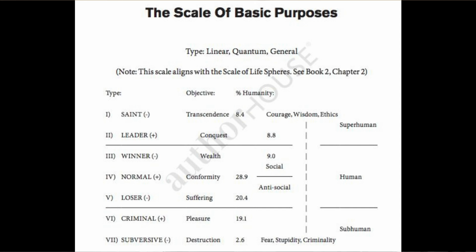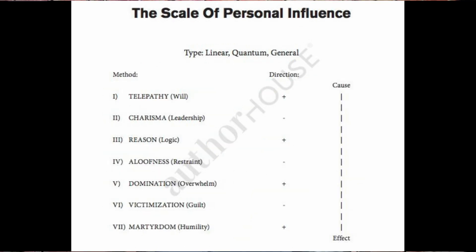There are only seven basic types of personal influence — all others are subsets. This is very important in assessing and understanding somebody. Again, we have the plus-minus: levels one, three, five, and seven are outflows; two, four, and six are inflows. For example, level five is domination — a very obvious outflow. A person at level four is aloof — restraining himself, clearly an inflow. This is also a quantum scale, because the plus-minus and quantum are related: in order to change level on a quantum scale, you have to reverse polarity.